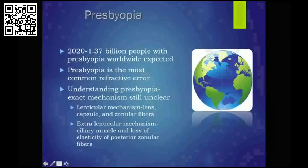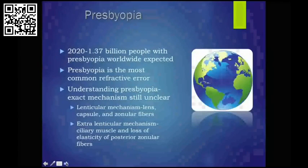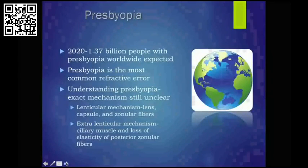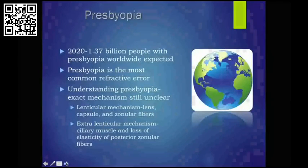Everybody understands presbyopia, but we really have to convey in basic terms what presbyopia means to the patient. We have to convey a clear understanding of the mechanics behind presbyopia, though we still don't know all the etiologies — it may be loss of capsular elasticity, zonular fiber function issues, changes in anatomy of the lens relative to the ciliary body. But I think mostly it's the hardening of the lens, which is my main theory, and patients can certainly understand that.